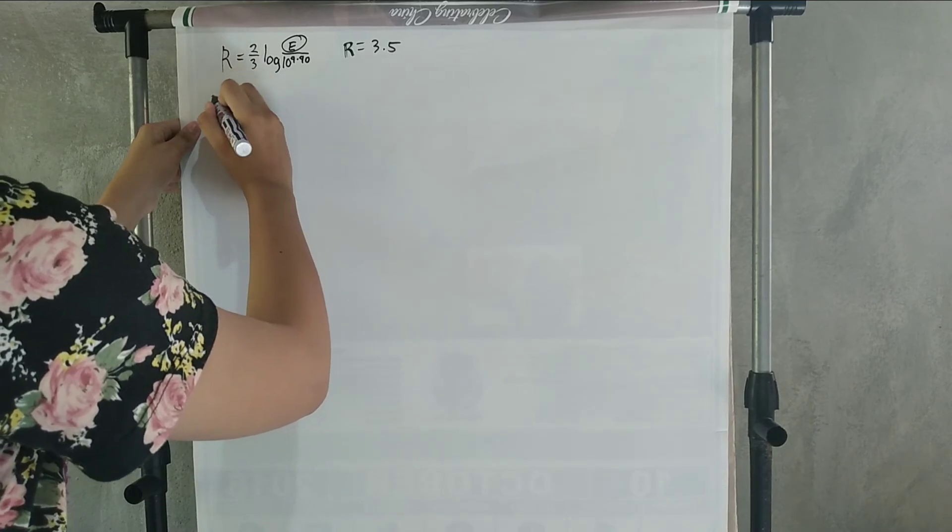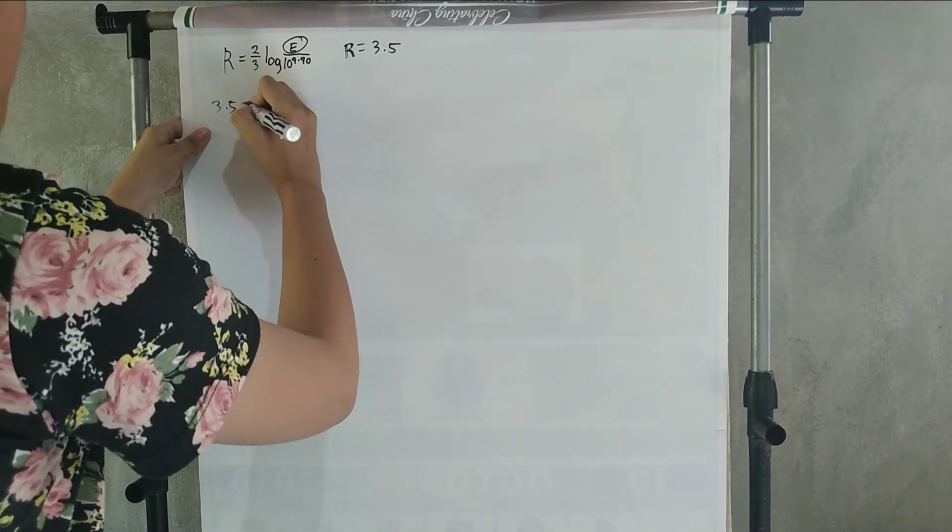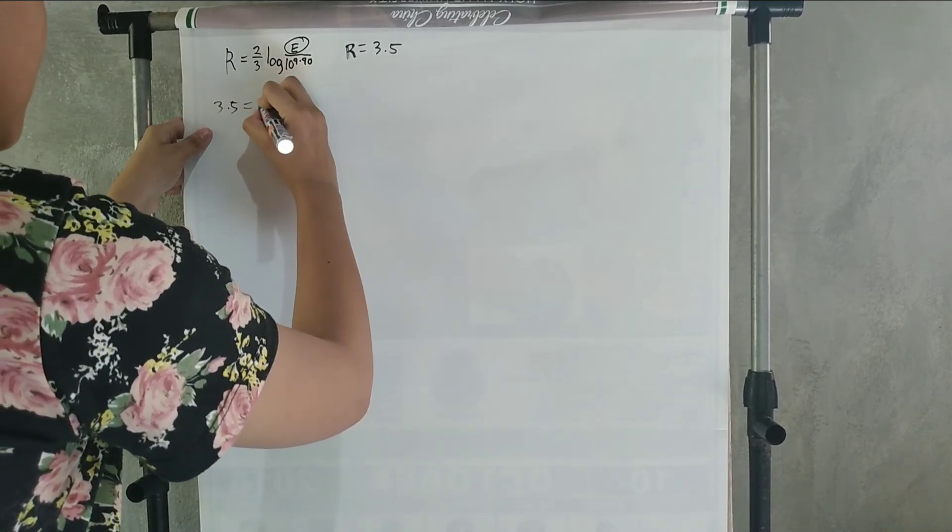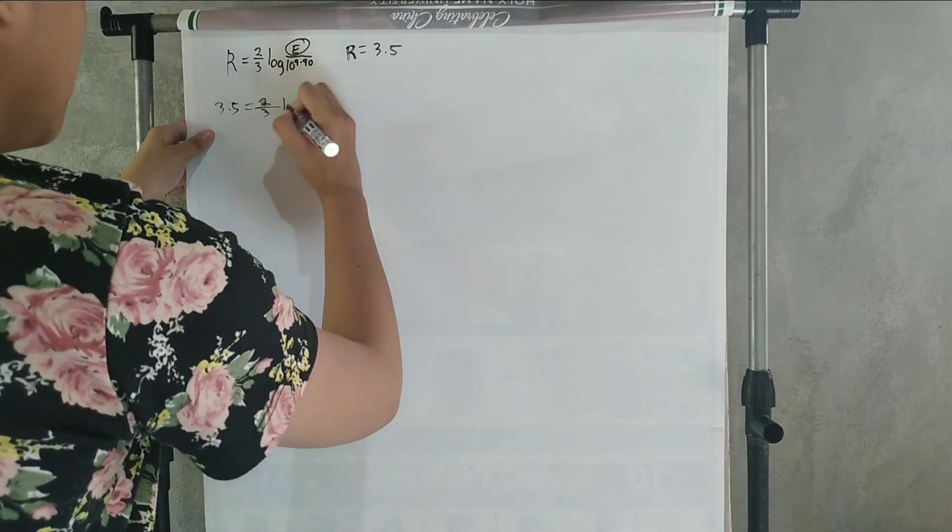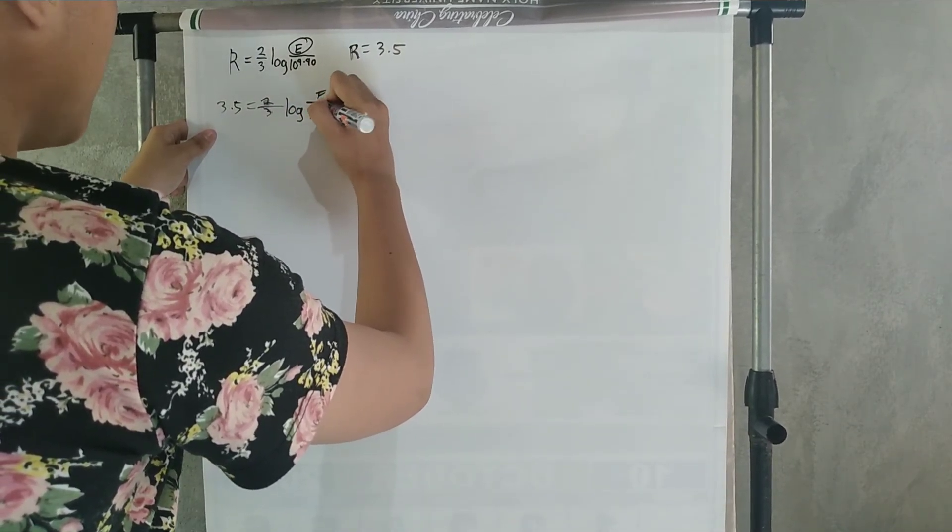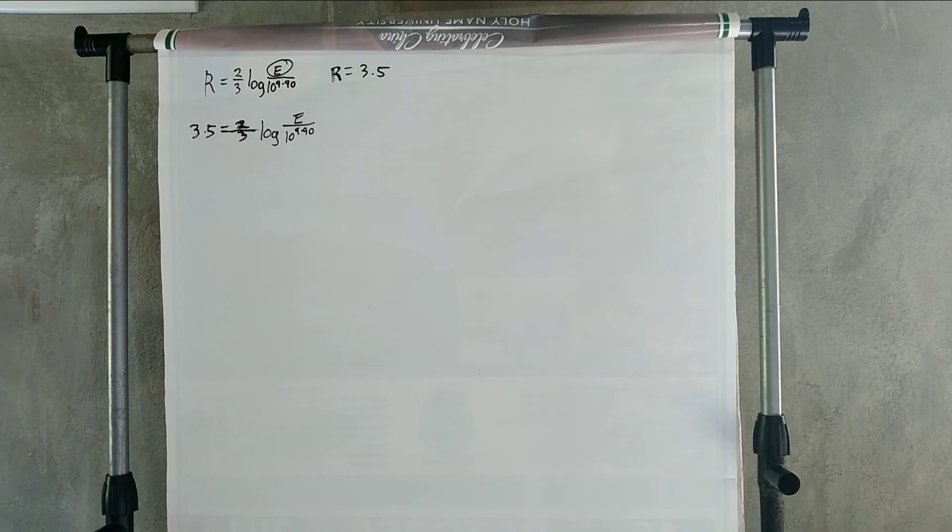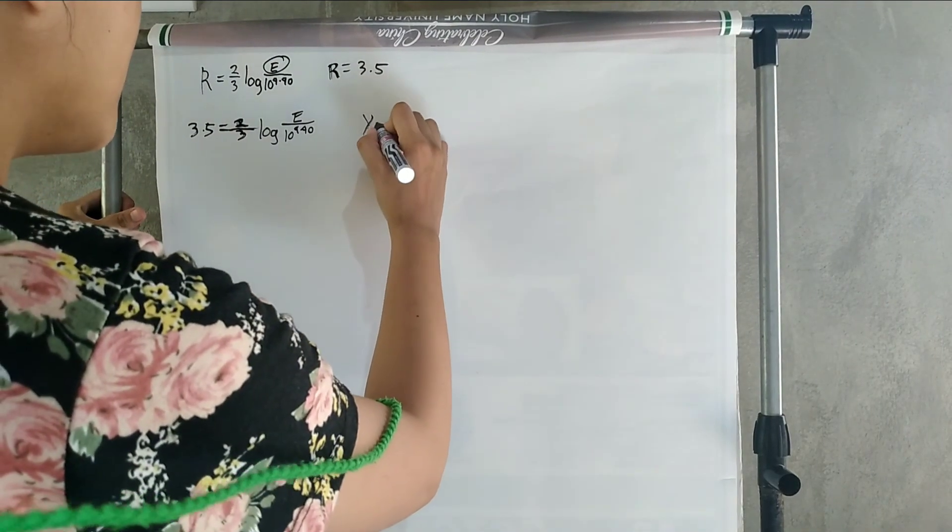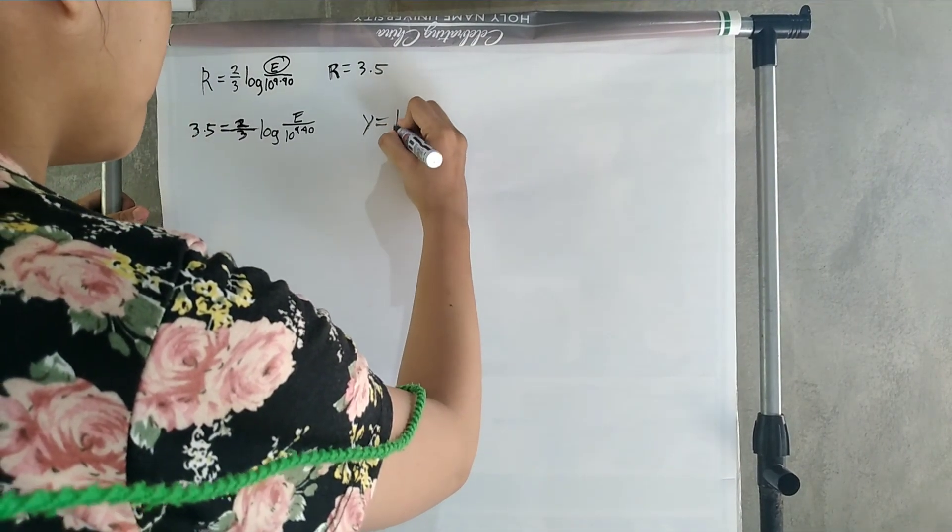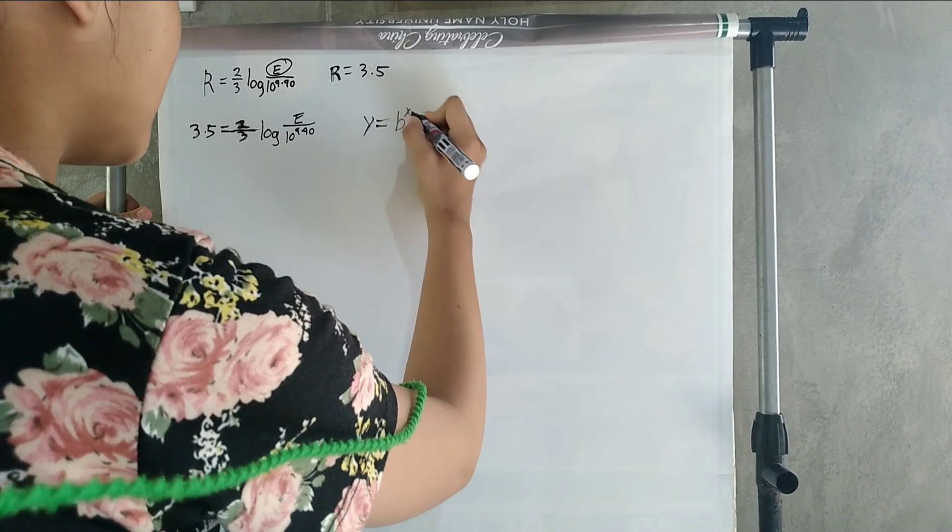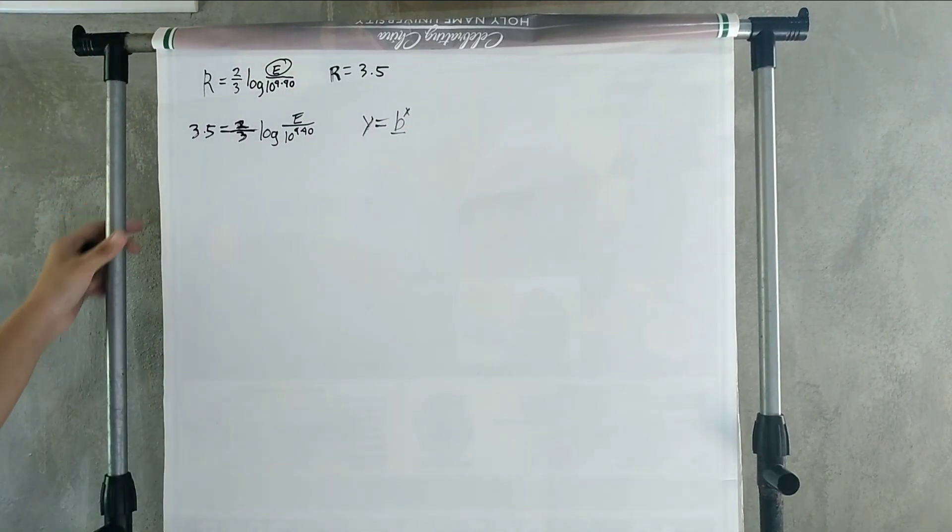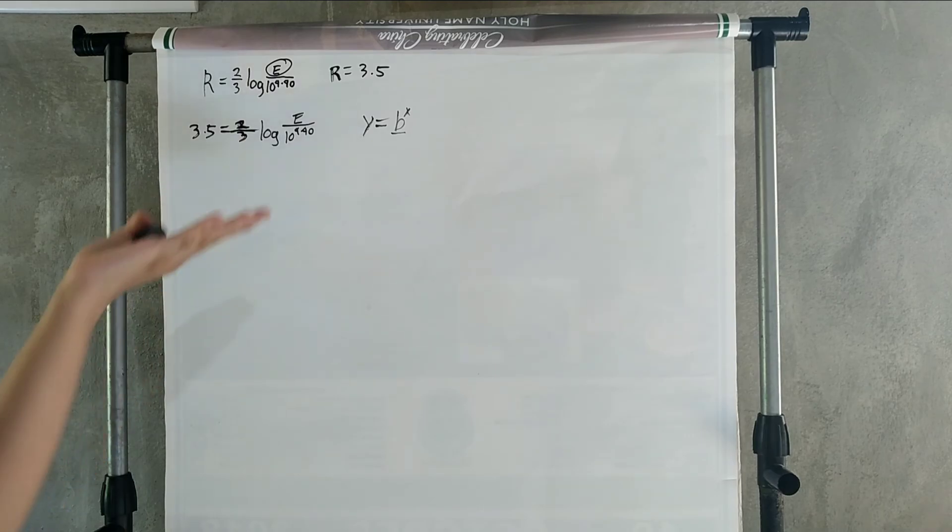So, from R, it will become 3.5 equals 2 thirds log E over 10 to the power of 4.40. Since a logarithm is an inverse of an exponential function, which is y equals b to the power of x, where b is our base, we're going to use that relationship of the two to find E.